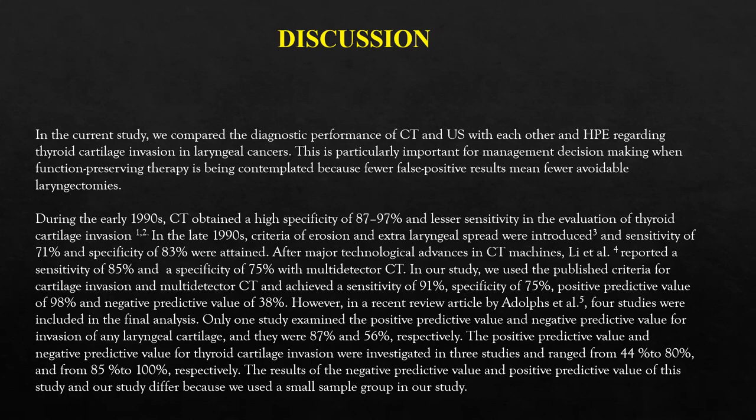In our study, we observed CT for cartilage invasion and achieved a sensitivity of 91% and specificity of 70%, positive predictive value of 98% and negative predictive value of 38%. In a recent review article, post-studies were included in the final analysis, with sensitivity ranging from 40% to 80% and specificity from 85% to 100% respectively for thyroid cartilage invasion. The differences in negative predictive value and positive predictive value between this study and others are partly because we used a small sample.